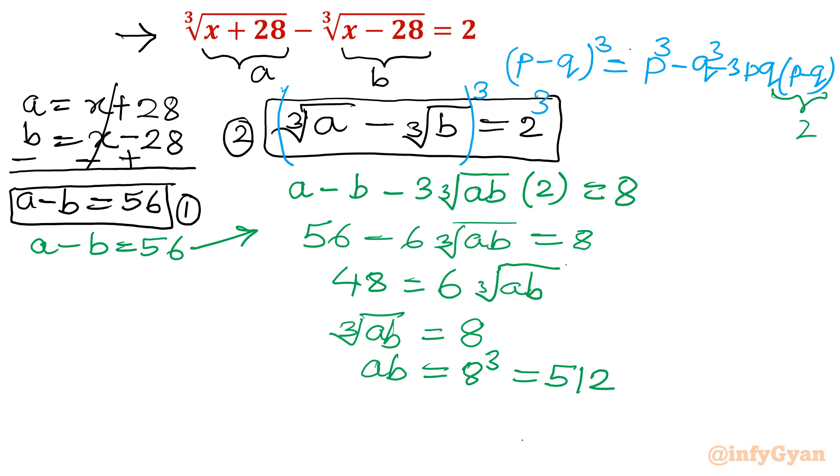After taking cube both sides I will get ab equal to 8 cube which is 512. That means ab is equal to 512. Remember it is 8 cube. Now what I will do. See equation 1 is already there in terms of a and b.